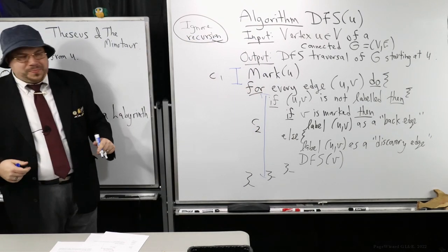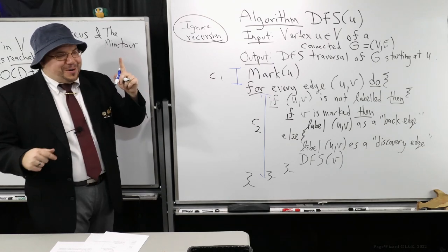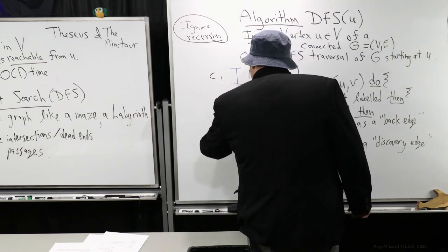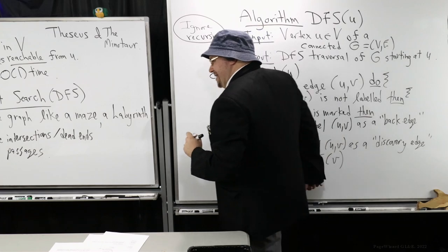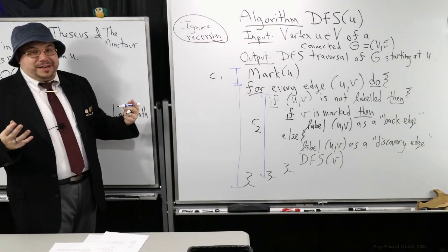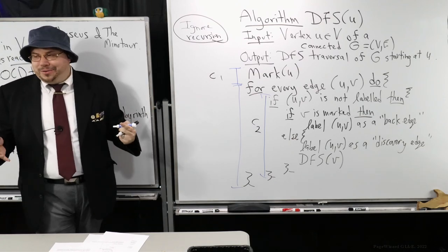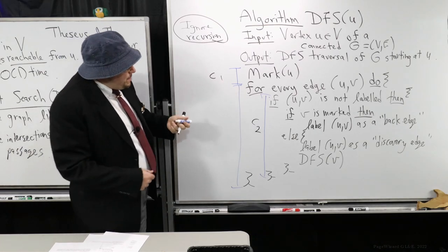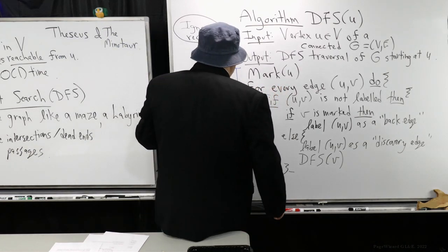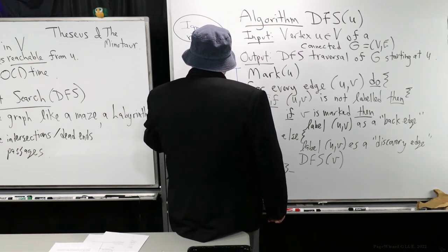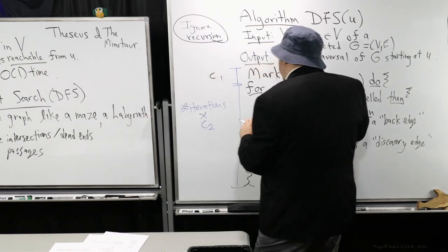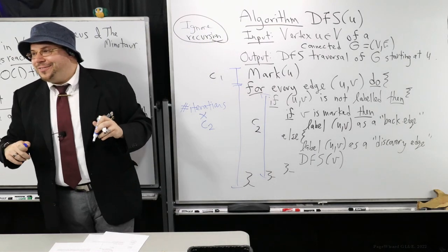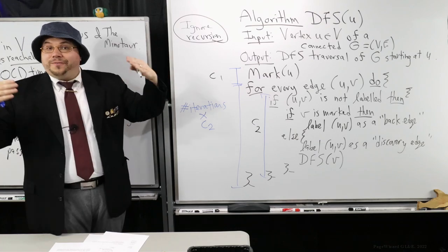With the recursion ignored, that means the recursive call takes constant time. Checking if an edge is labeled is constant time since we have direct access to the edge object. Labeling an edge is constant time. So everything inside the loop body takes C2 many operations. What remains is the loop itself — we haven't accounted for the number of iterations, which depends on how we represent the graph. So for one call of DFS, the cost is C1 plus C2 times the number of iterations of that loop.